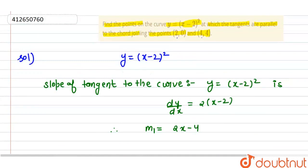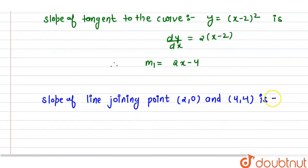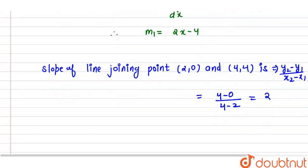So y₂ minus y₁ upon x₂ minus x₁ equals 4 minus 0 upon 4 minus 2, which is 4 upon 2, that equals 2.